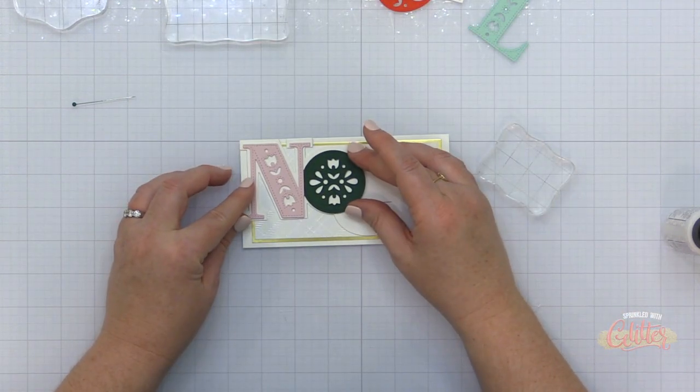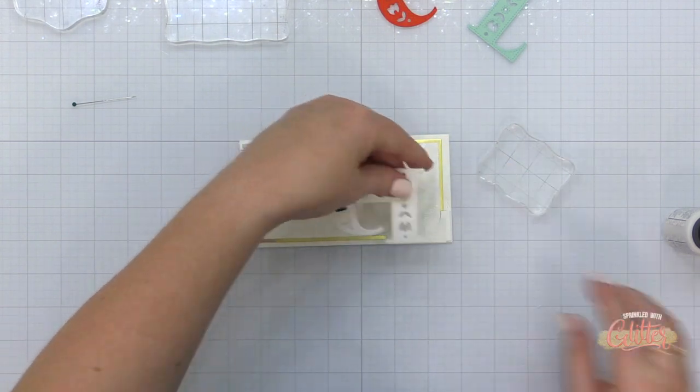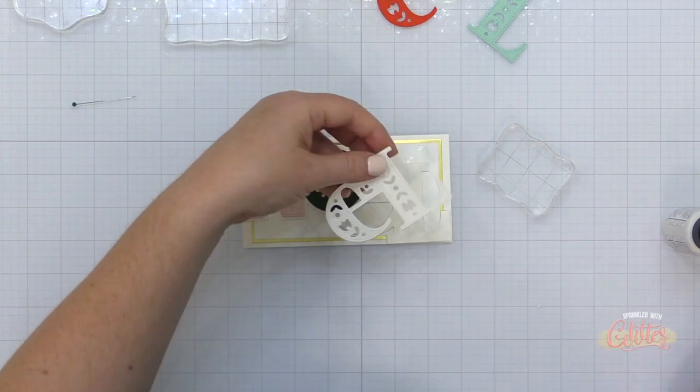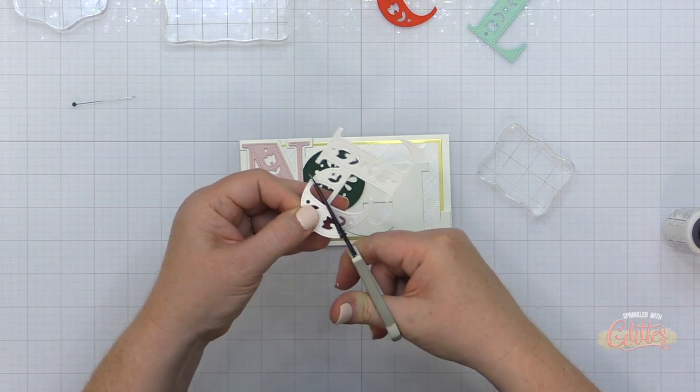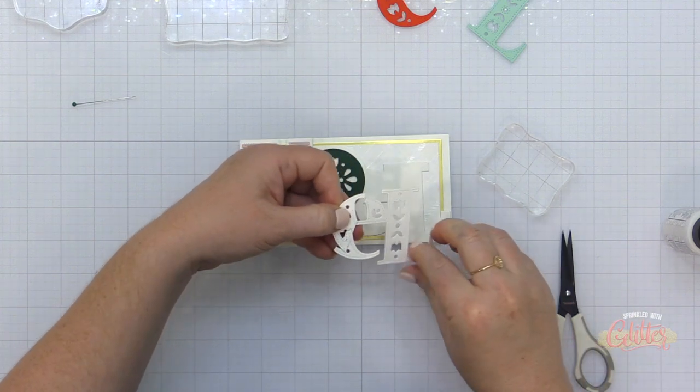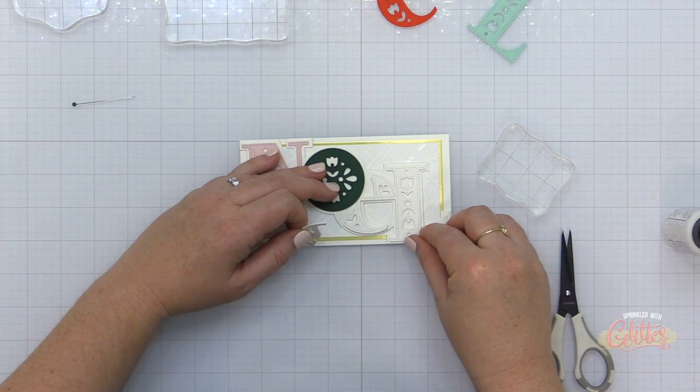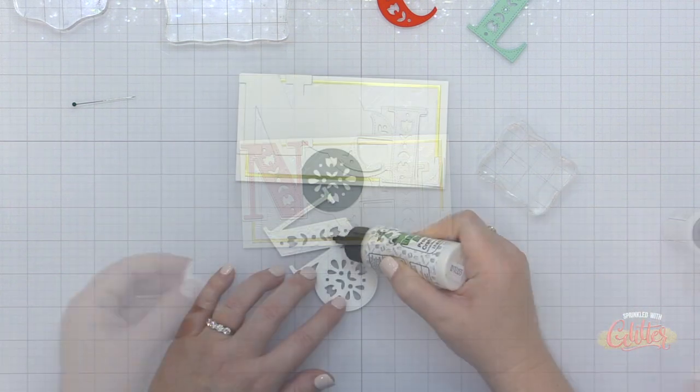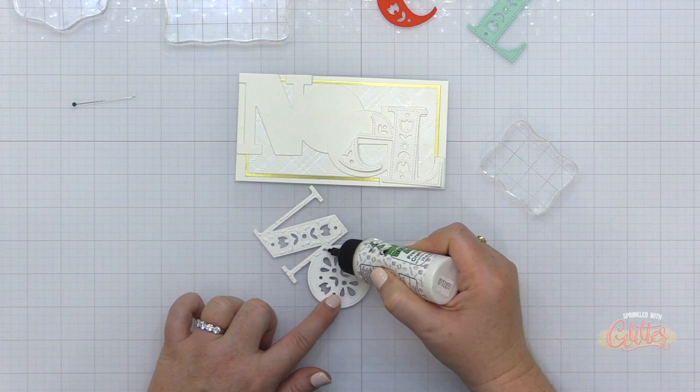Now I can start adding my colored pieces onto the base. This E and L are going to overlap that O and in order to keep it from getting too bulky, I'm just going to trim off the part of the E that would overlap with the O. So that way I don't have all of these layers overlapping. Then I'm going to start adding my liquid glue to the back and add this onto the base.